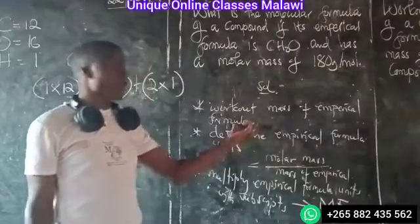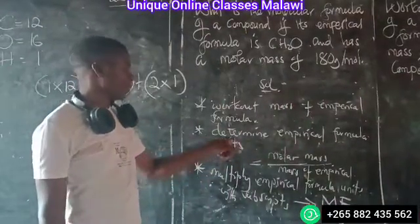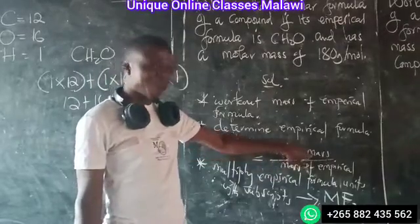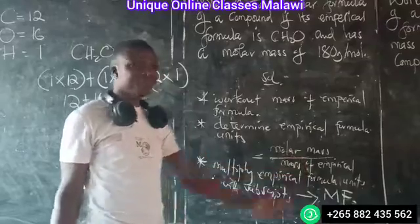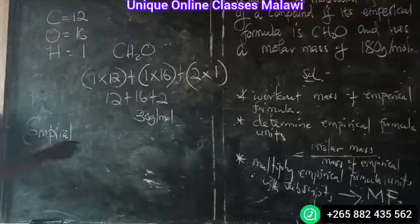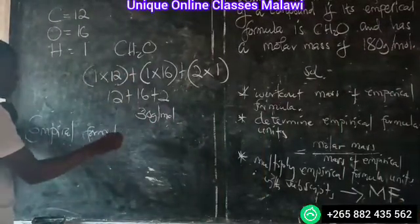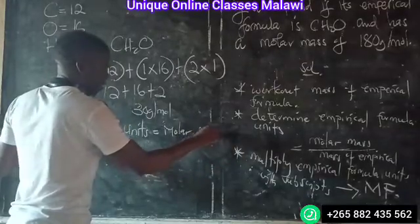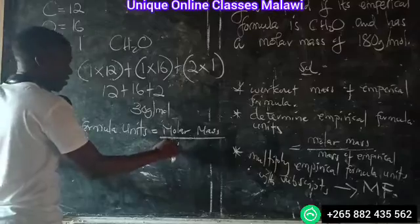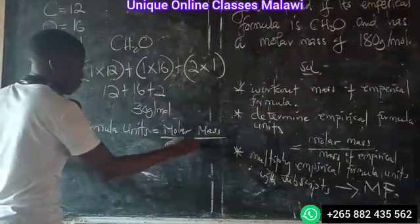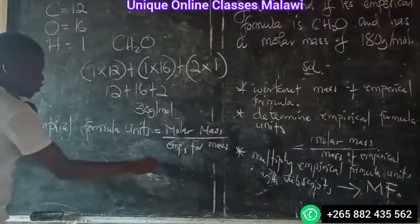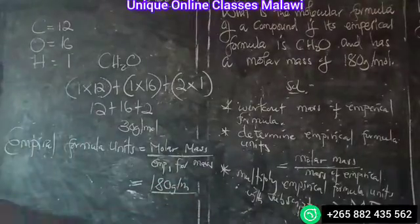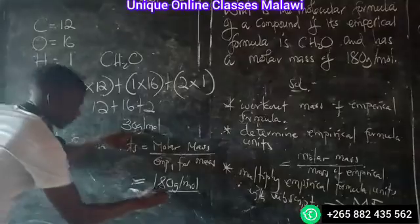If you have the mass of the empirical formula, you can now find the empirical formula units. The formula units equal the molar mass divided by the mass of the empirical formula. So that is 180 grams divided by 30 grams, which equals 6. So the empirical formula units are 6.